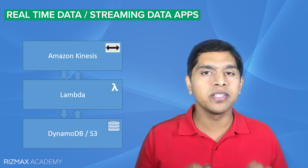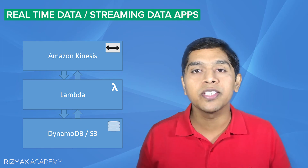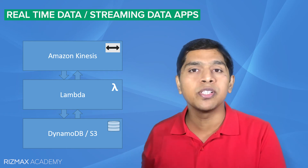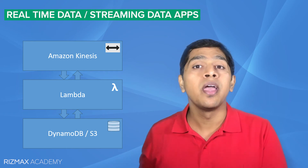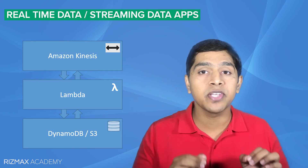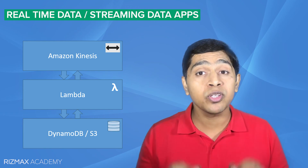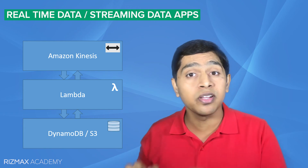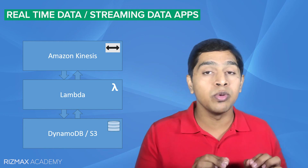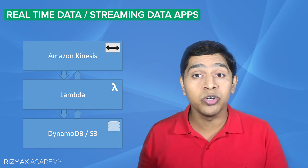For example, social media streaming data from several sources can be loaded into Kinesis simultaneously and then processed in real-time using AWS Lambda and DynamoDB.